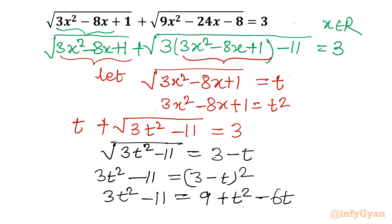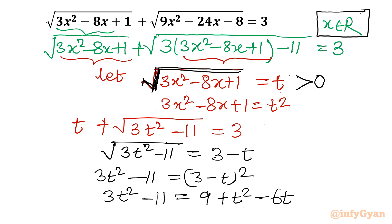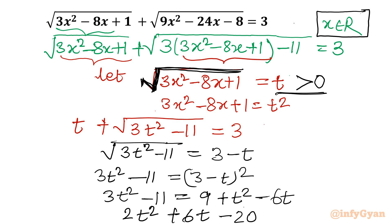One important thing: since we are finding real values of x, t must always be positive, as t is the square root of a number and cannot be negative. If the square root were negative, that value would give a complex solution. So remember, t must be positive — we will accept only those values of t that are positive. Rearranging the equation gives: 2t² + 6t - 20 = 0.